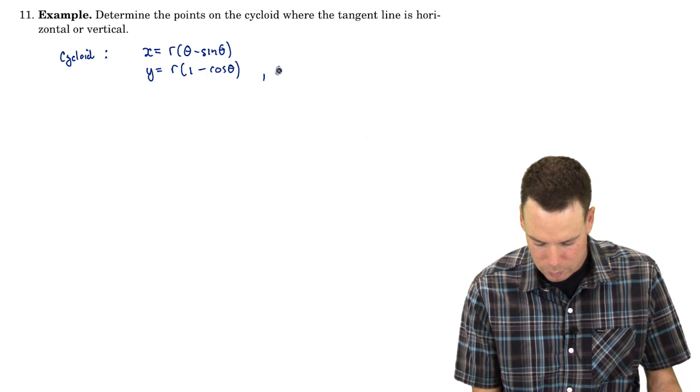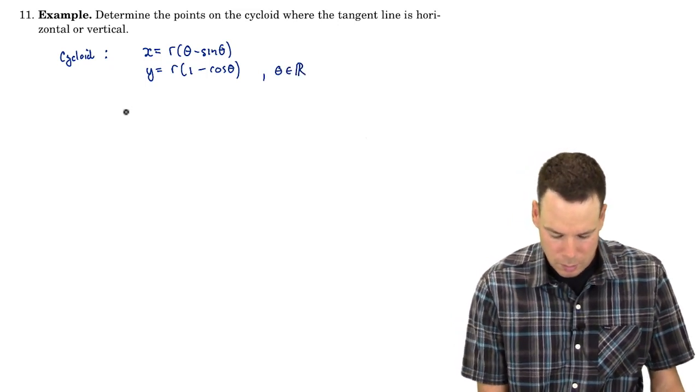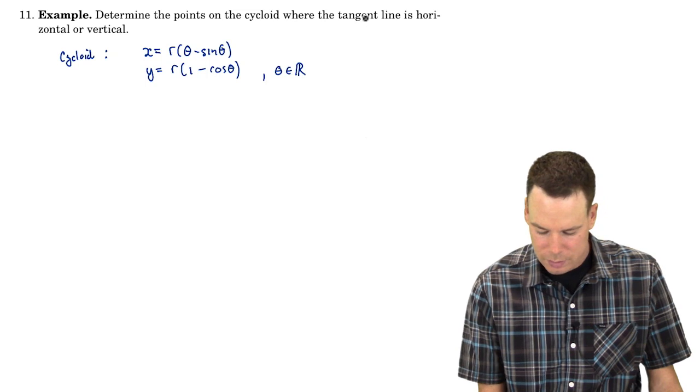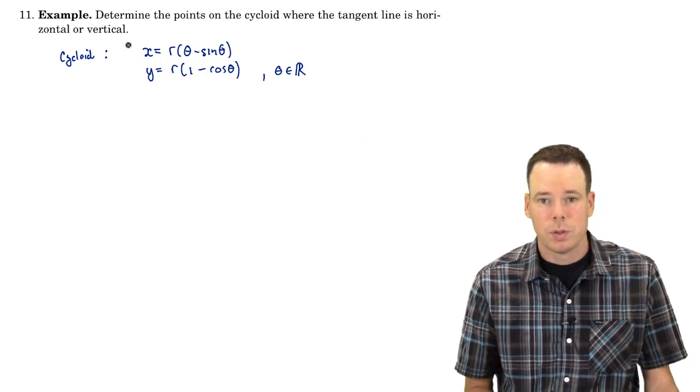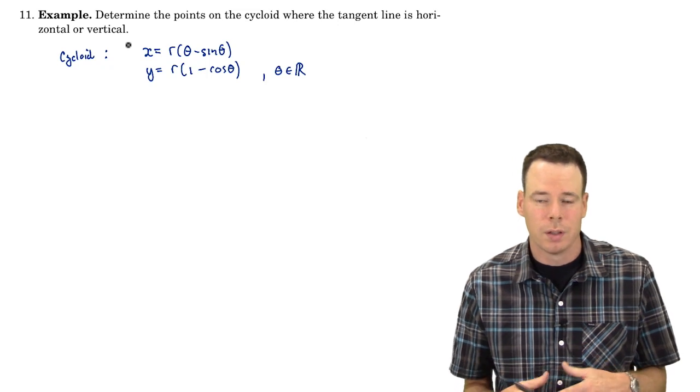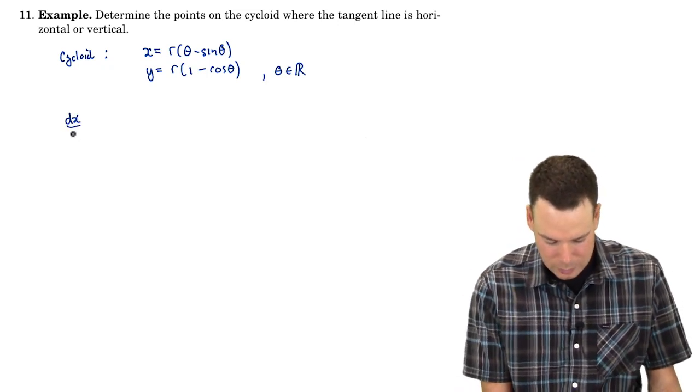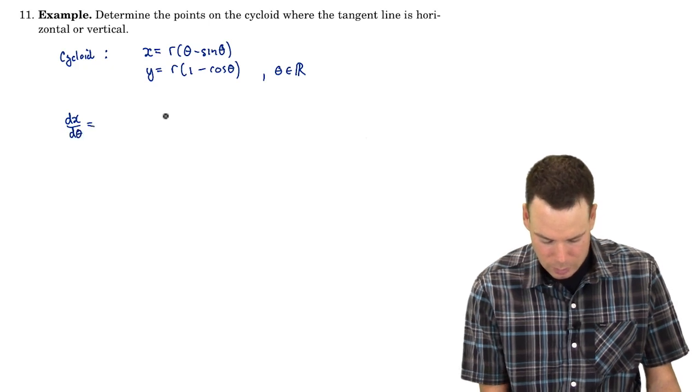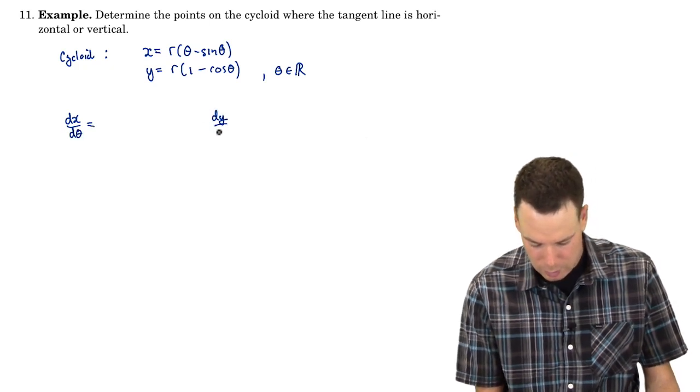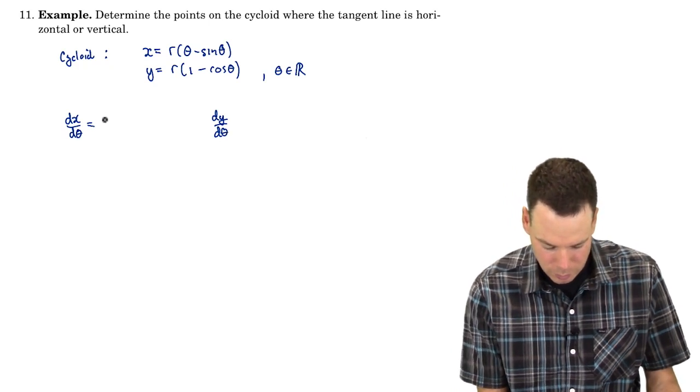And theta was allowed to take any real number. Where the tangent line is horizontal or vertical is really asking where is the derivative horizontal or undefined. So I first need the derivatives dx by d theta and dy by d theta, and then I put those together to get the derivative of y with respect to x.